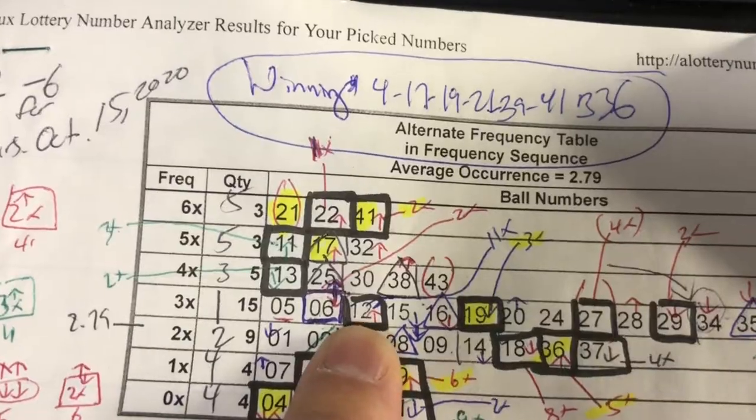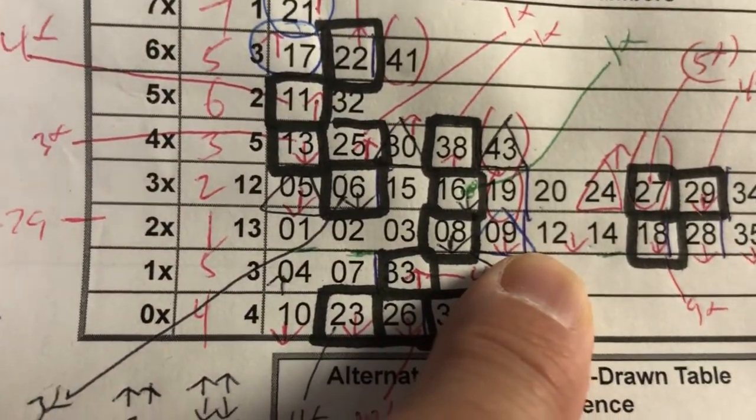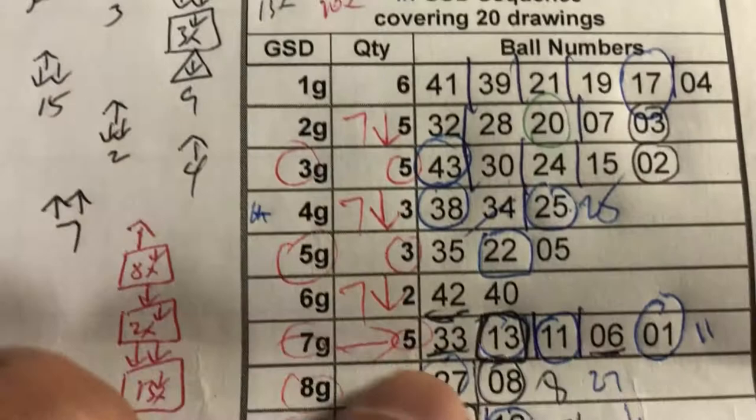And then it finally dropped to tier 3 on 2x. So I look down this list. Where is 12?